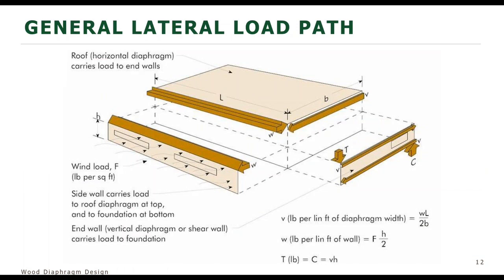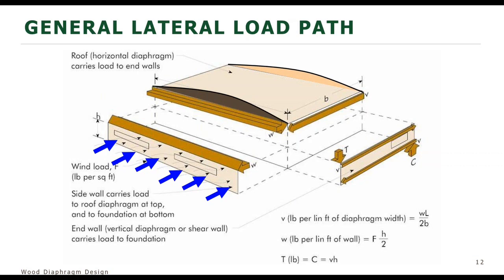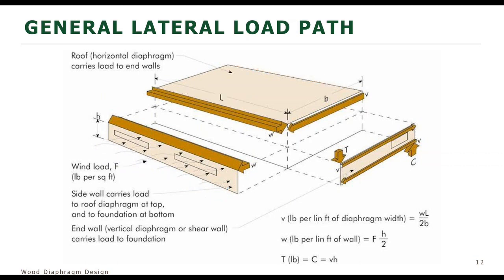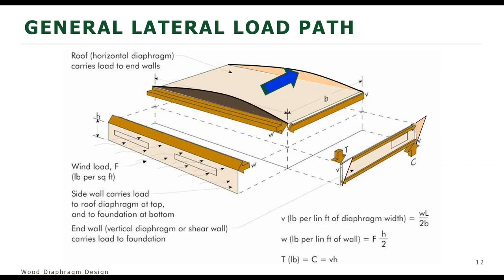Here's a basic overall look at a diaphragm and how loads are transferred to it — wind design and seismic design. For wind, pressure applies to the walls; the walls have studs spanning from the foundation to the top plates and the diaphragm. The walls transfer the load to the diaphragm, which deflects and transfers the load to the shear walls. For seismic loads, we idealize it as if the mass of the building is concentrated at the roof diaphragm. The earth moves back and forth, the structure wants to catch up, and that load is resisted by the diaphragm, which acts like a beam and transfers load to the shear walls.